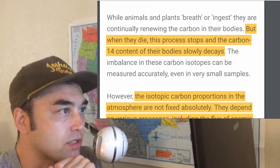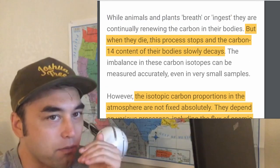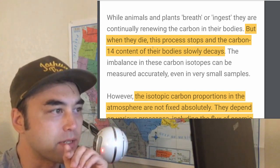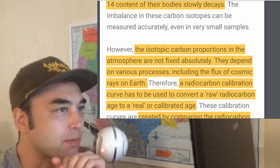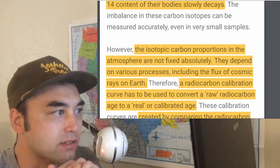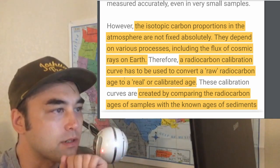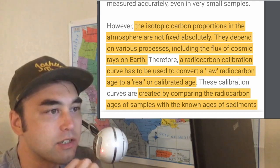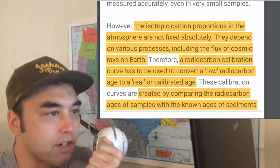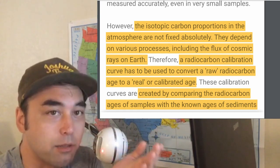This process stops and the carbon-14 content of their bodies slowly decays. But the problem with carbon-14 is anything beyond 10,000 to 12,000 years or so, the accuracy becomes very inaccurate. The isotopic carbon proportions in the atmosphere are not fixed absolutely — they depend on various processes, including the flux of cosmic rays on Earth. Therefore, a radiocarbon calibration curve has to be used to convert a raw radiocarbon age to a real or calibrated age. Whenever you see in a scientific article 'calibrated' or 'KCAL', that's what they're talking about — this calibration curve.